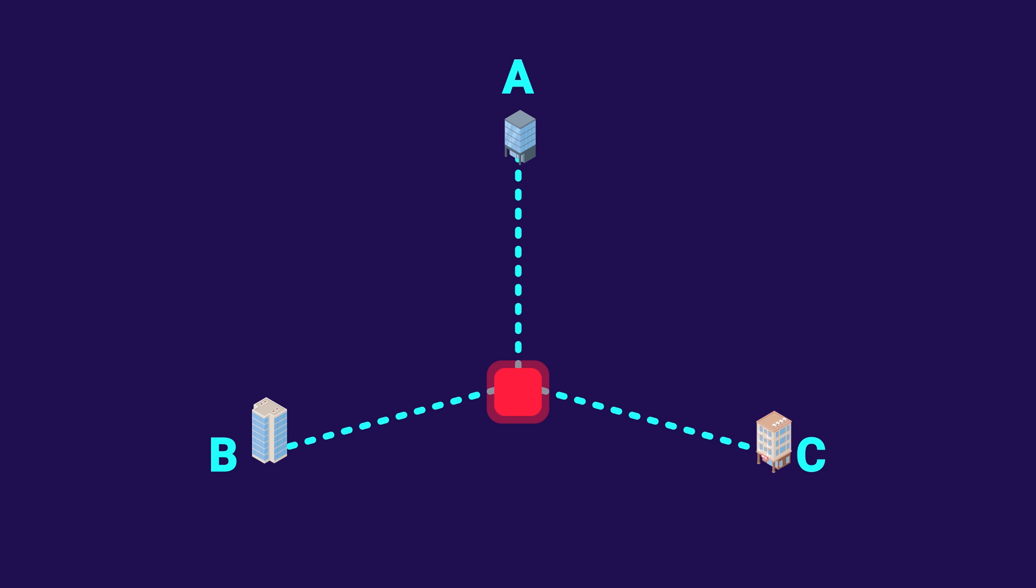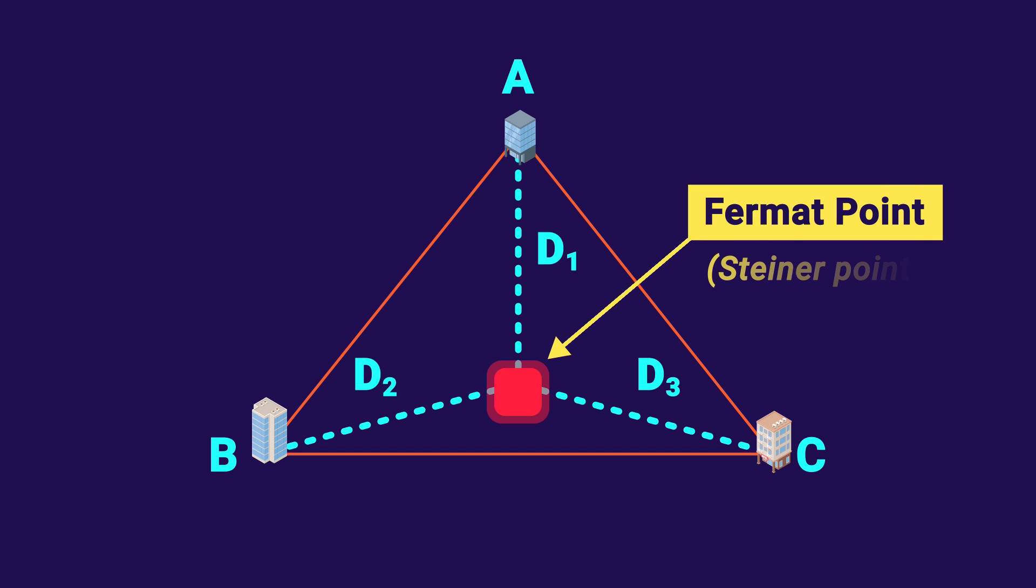The school version of this question would be, given a triangle, which point minimizes the total distance to all the vertices, or D1 plus D2 plus D3? That point, wherever it may be, we call the Fermat point, or in some sources I saw it called the Steiner point.